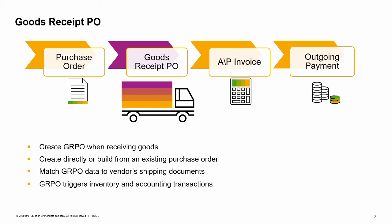Regardless of how you create your goods receipt PO, there should be no differences between the data in the goods receipt PO and the vendor's shipping document or packing slip sent with the items, because the details in the vendor's document are legally binding. If there are any discrepancies between the base PO data and the vendor's shipping document, you should resolve them with the vendor before you post your goods receipt PO. It is essential that the quantities and prices in your goods receipt PO match the vendor's shipping document. Unlike a purchase order, a goods receipt PO cannot be amended after it has been added to SAP Business One because it triggers both inventory and, when using perpetual inventory, accounting transactions. Your only option for fixing an incorrect goods receipt PO is to cancel the document and create a new goods receipt PO.